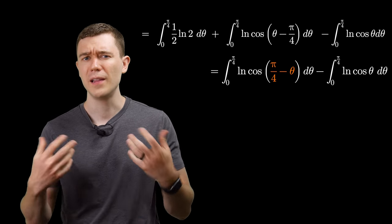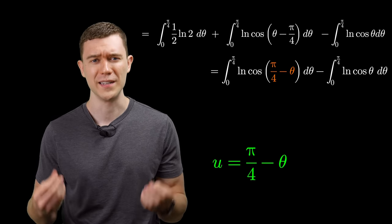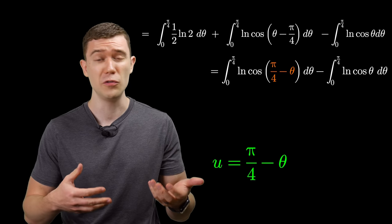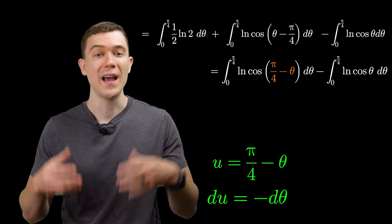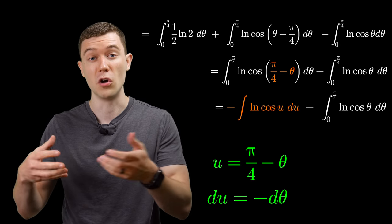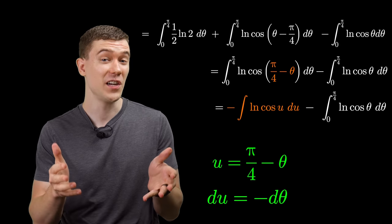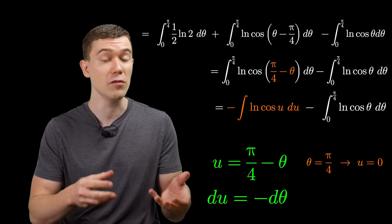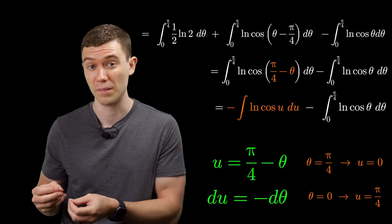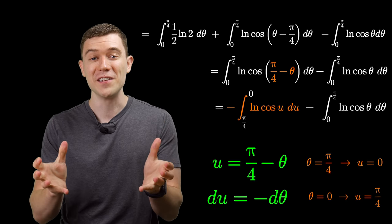Do a u substitution here. Let u equal pi over 4 minus theta. That means du equals minus d theta, and this integral can be rewritten as negative natural log cosine of u du. To change the bounds, when theta is pi over 4, u will be 0, and when theta is 0, u will be pi over 4.